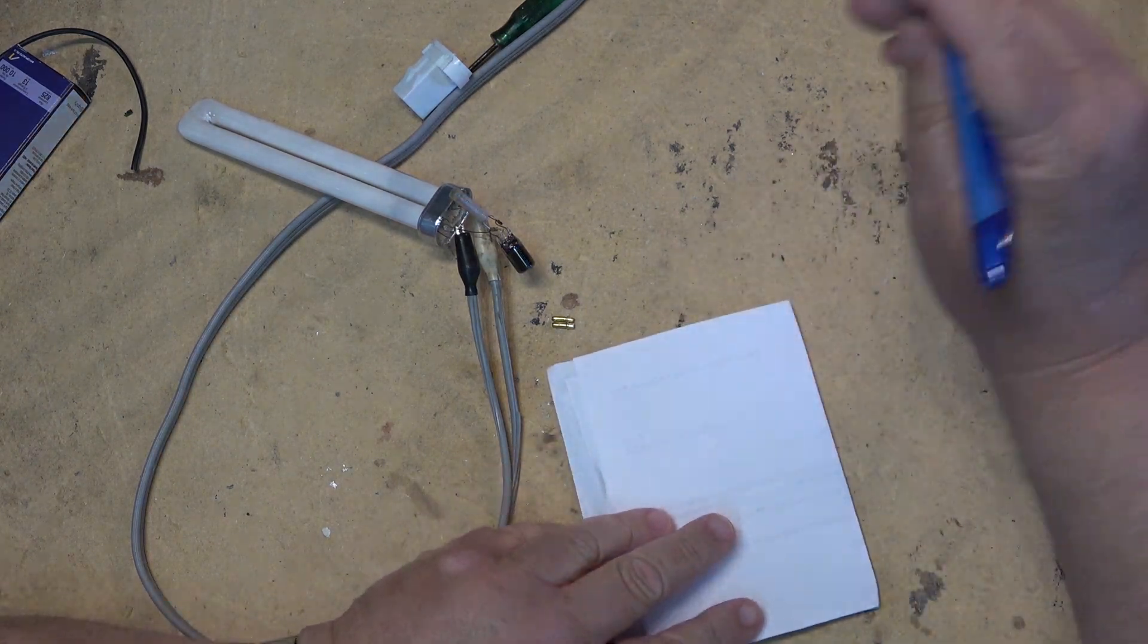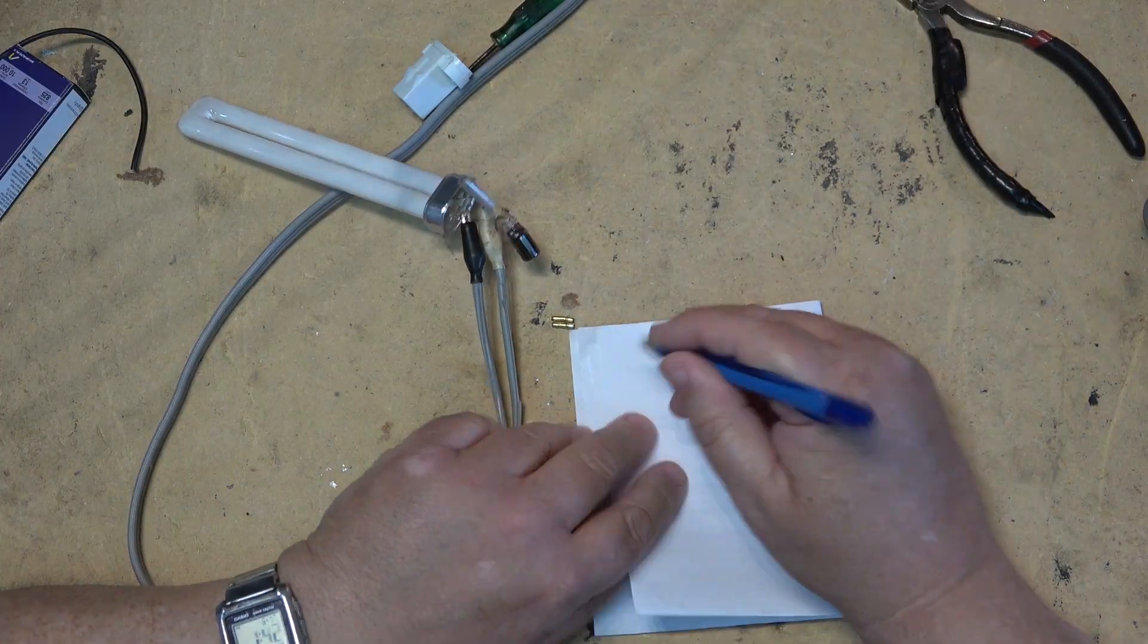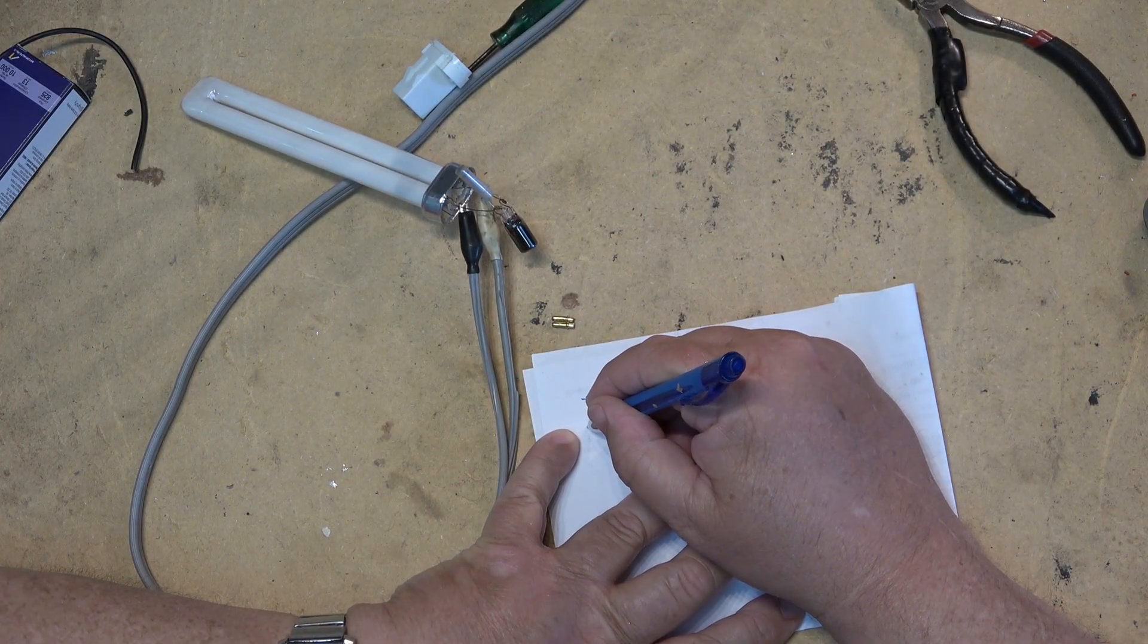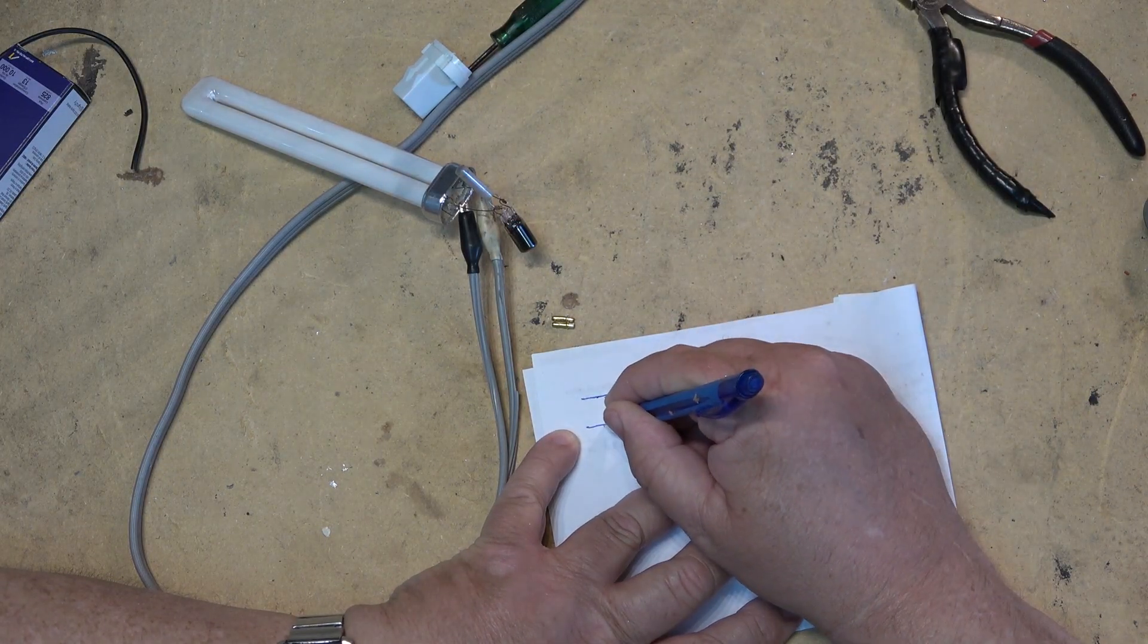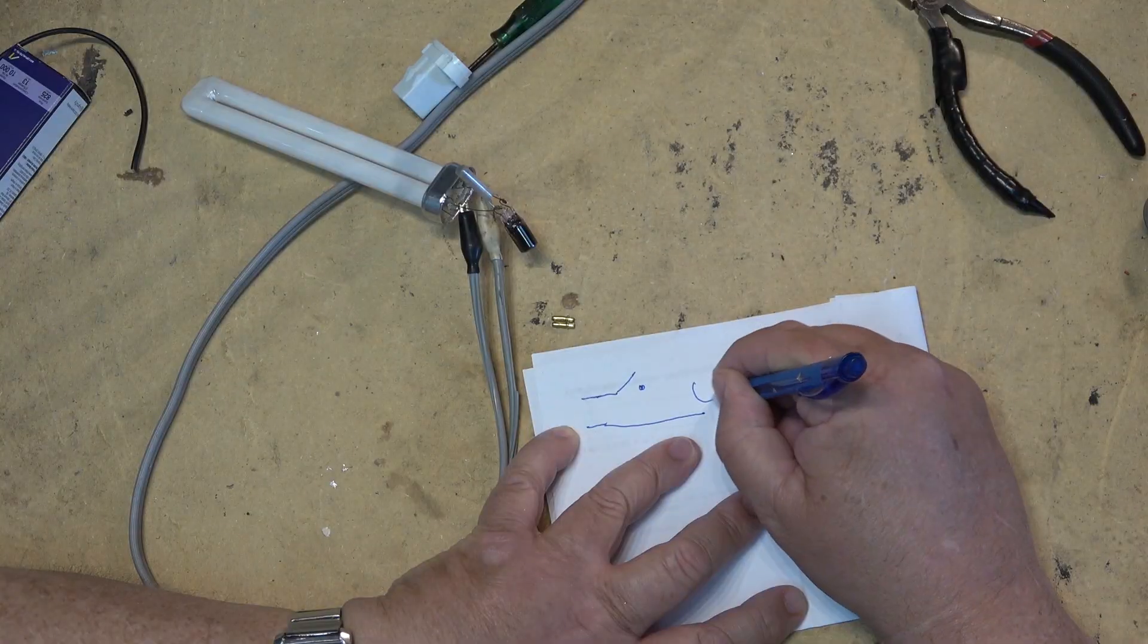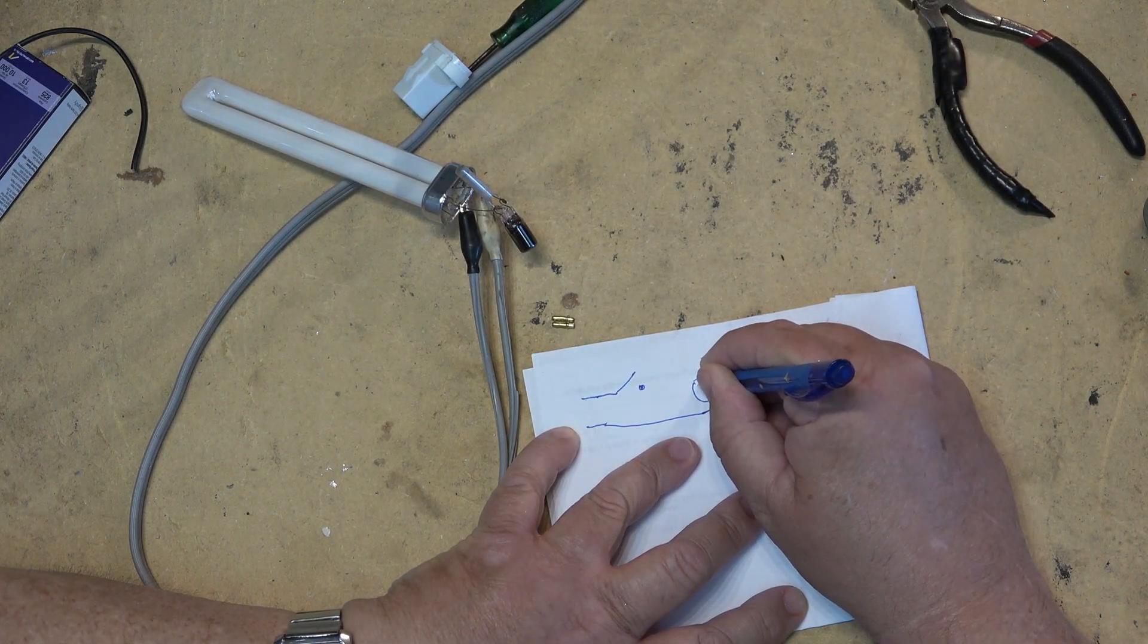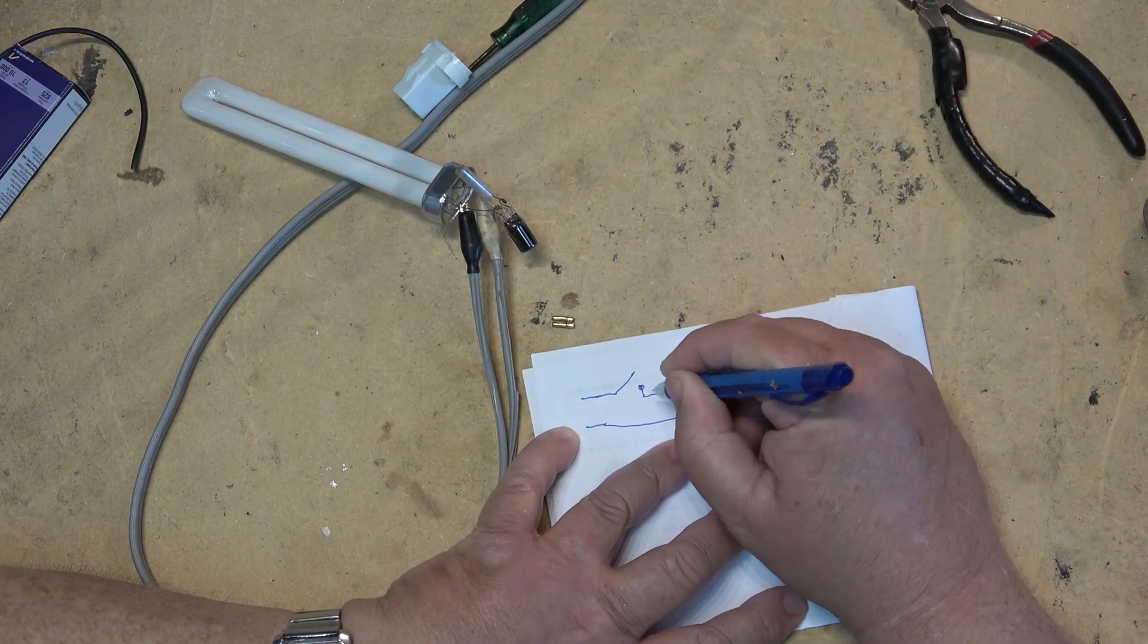So my dim bulb, as you know, the schematic for the dim bulb is as follows. So you got your power and I've got a switch here, and then this goes to the outlet. This one goes to the neutral side and then the hot side goes like that to the switch. And then I've got a 100 watt light bulb in this case here, a lamp.